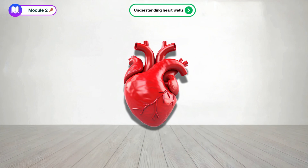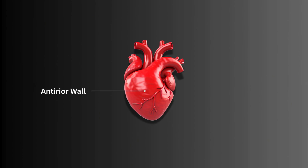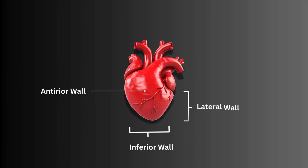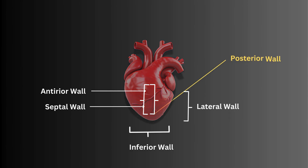In this module, we'll focus on five main heart walls. These are: the anterior wall, that's the front of the heart closest to your chest; the inferior wall at the bottom; the lateral wall, which is on the side of the heart; the septal wall, which is the wall in the middle separating the left and right sides; and the posterior wall, which is at the back of the heart towards your spine.